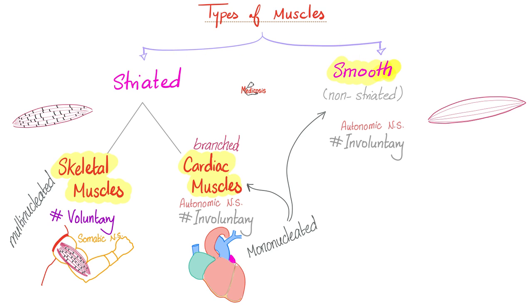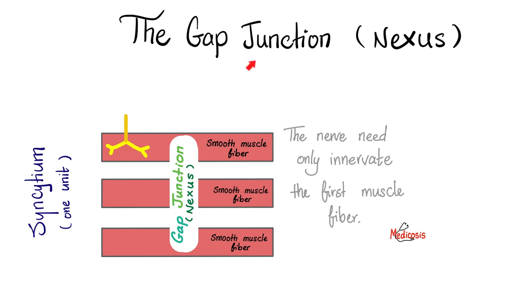Types of muscles: we have striated and smooth or non-striated. Striated could be skeletal muscles or cardiac muscles. Skeletal muscles are voluntary; cardiac, involuntary. Skeletal muscles are multinucleated; cardiac muscles, on the other hand, are mononucleated. The gap junction, or nexus, is a gap between several muscle fibers — so that just one nerve fiber supplies many muscle fibers simultaneously, so that your entire muscle contracts as one unit. Hashtag syncytium — in synchrony.